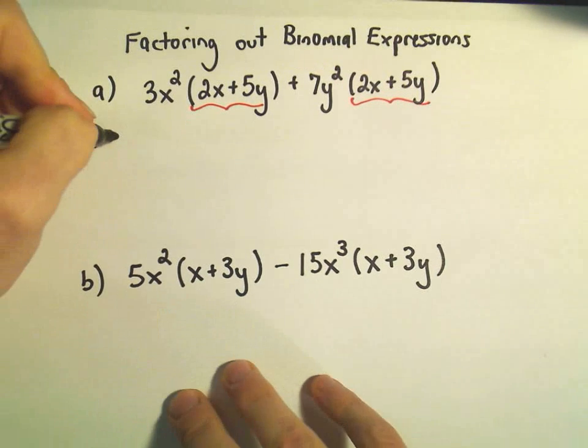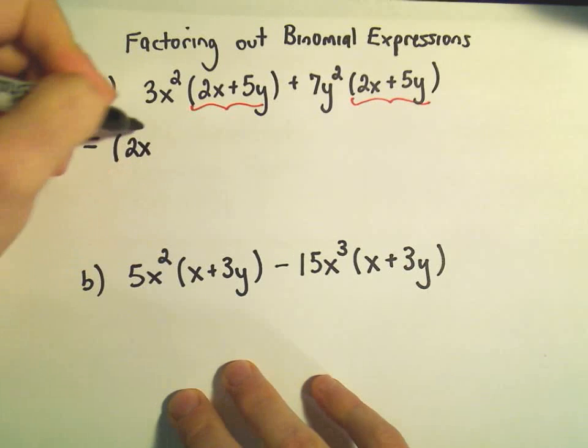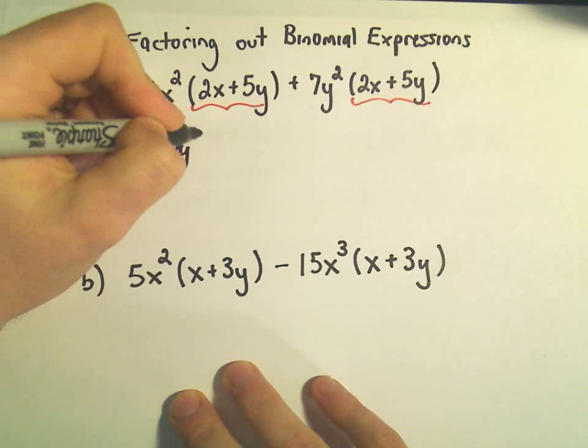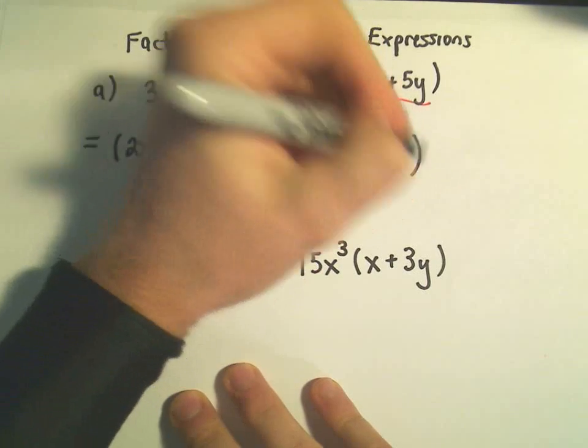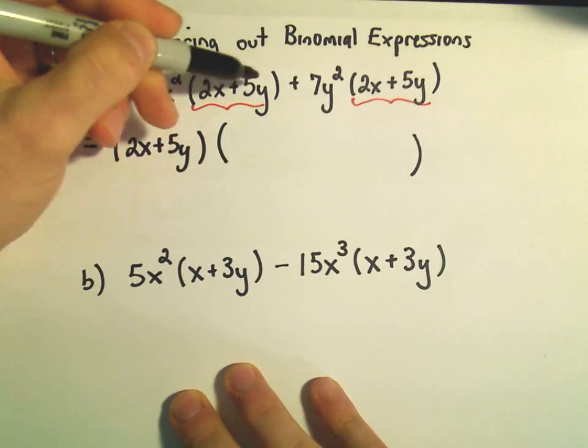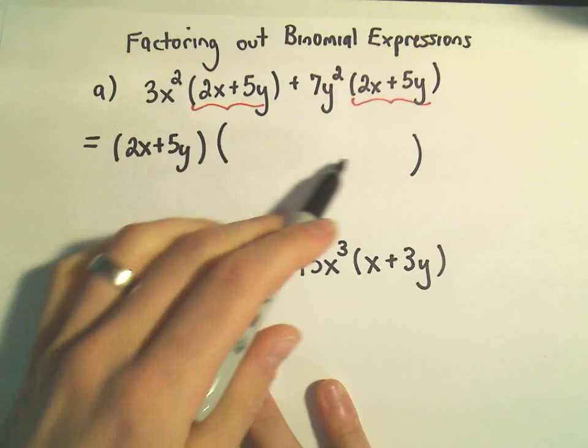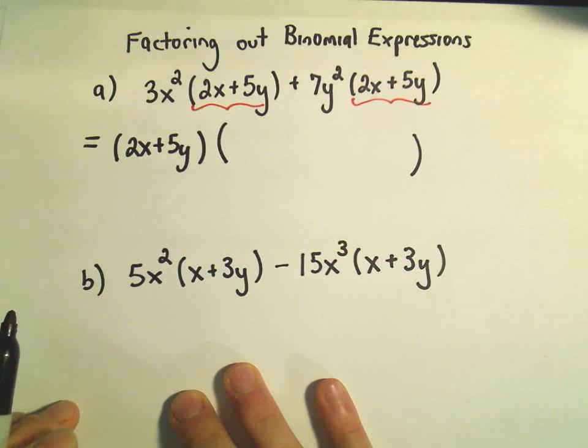I'm going to pull out this quantity 2x plus 5y. And then I need two things, since I have two terms originally, one term, two terms, that means in the parentheses I'm going to need two terms as well.